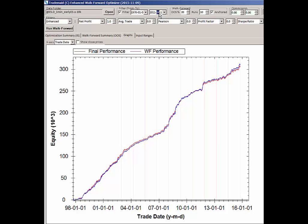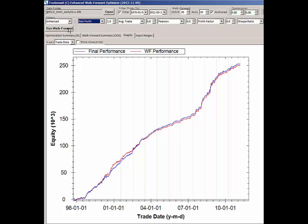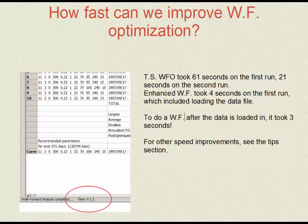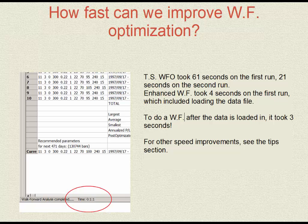On TradeStation, we would have had to re-optimize the entire dataset again — many hours of CPU time — and then run the walk-forward optimizer. But now, with enhanced walk-forward optimizer, you just change the date, a few seconds later click, and it's done. The sample system here has a file about one gigabyte long. TradeStation took 61 seconds on the first run to walk-forward it, and WFOE took 4 seconds. Second time around, TradeStation — because it already had it in RAM — was a bit faster at 21 seconds, but enhanced walk-forward optimizer took 3 seconds. A phenomenal difference in speed.